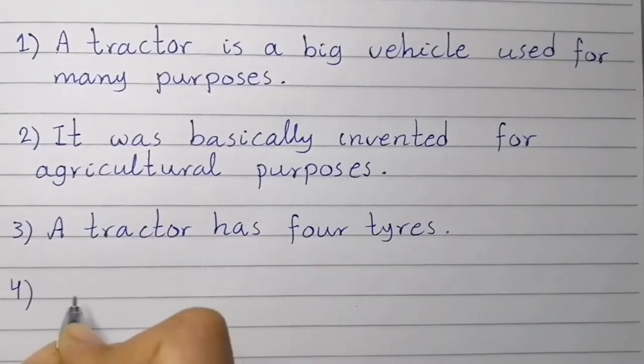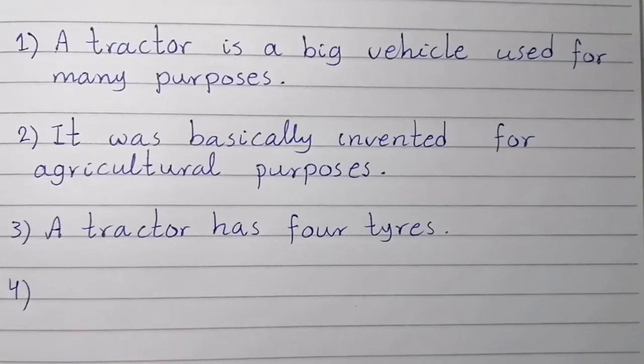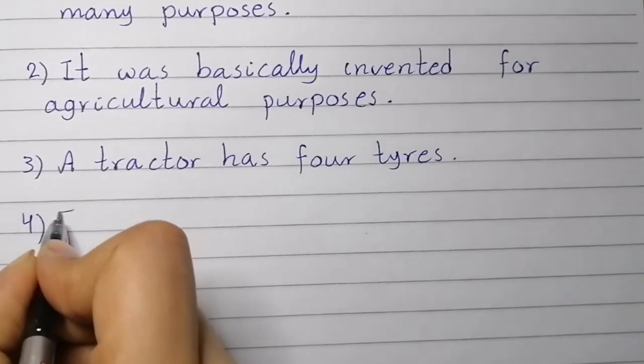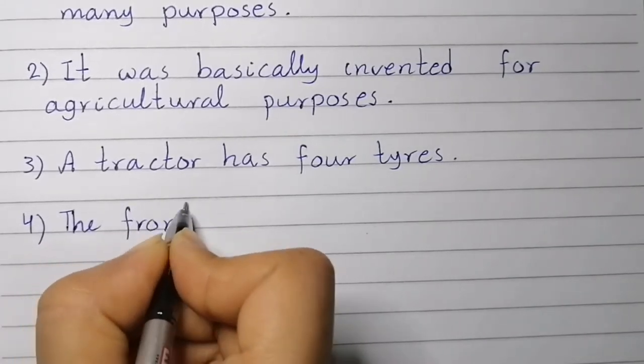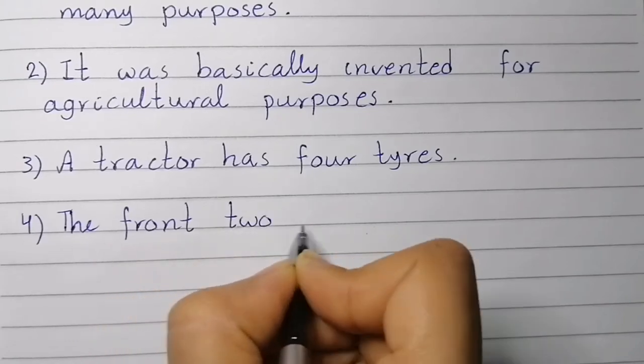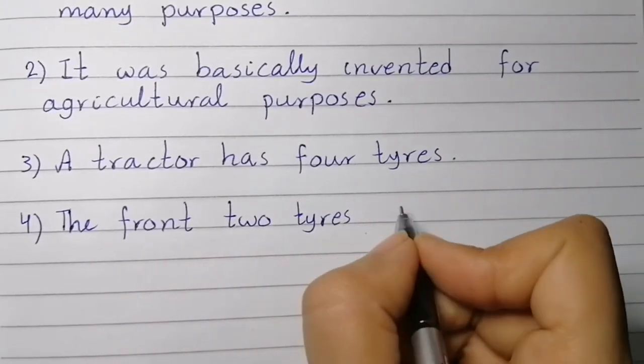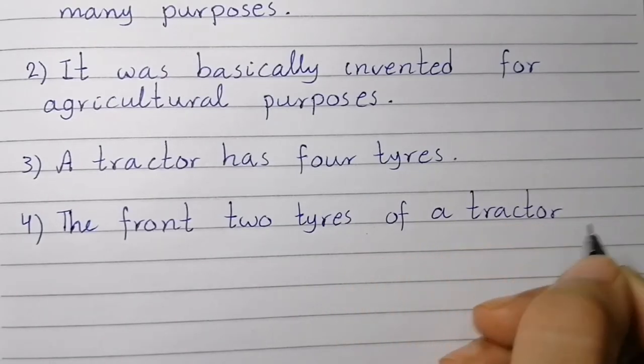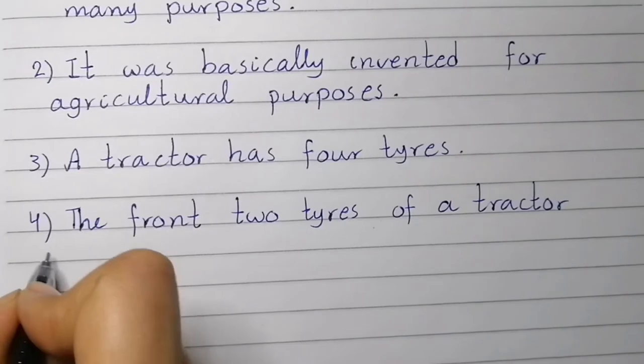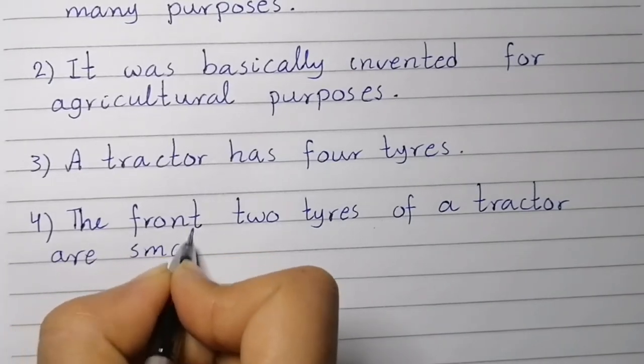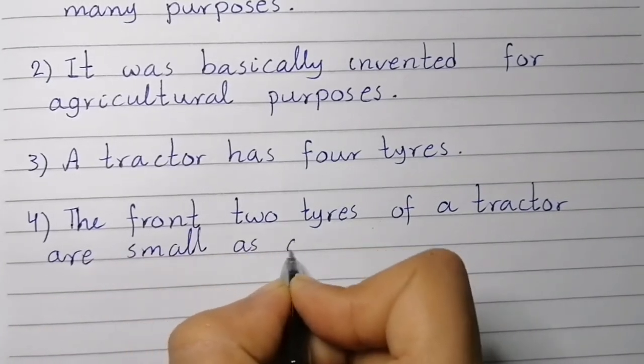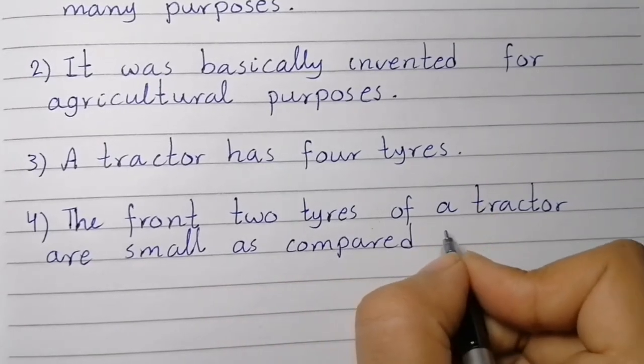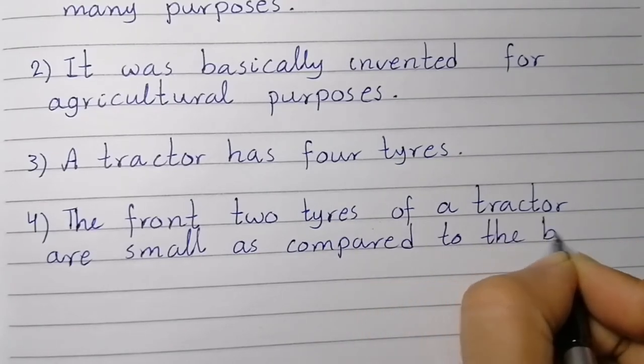Point number four: The front two tires of a tractor are small as compared to the back tires.